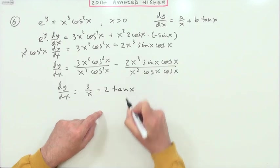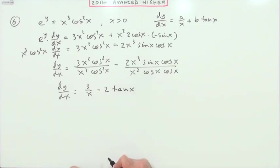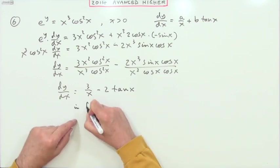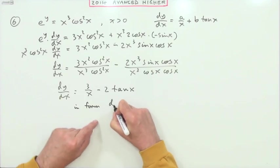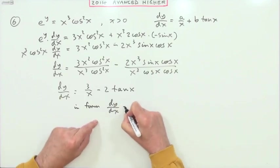And then I'll probably finish off by saying which is in the form dy/dx equals a over x plus b tan x.